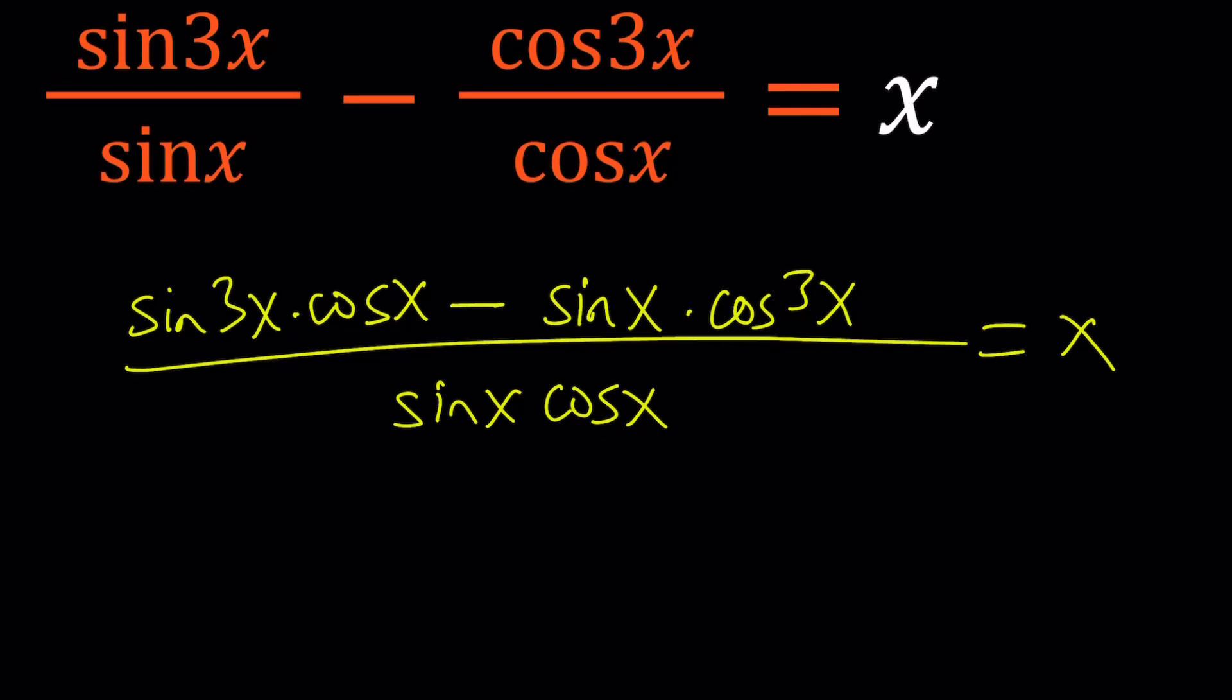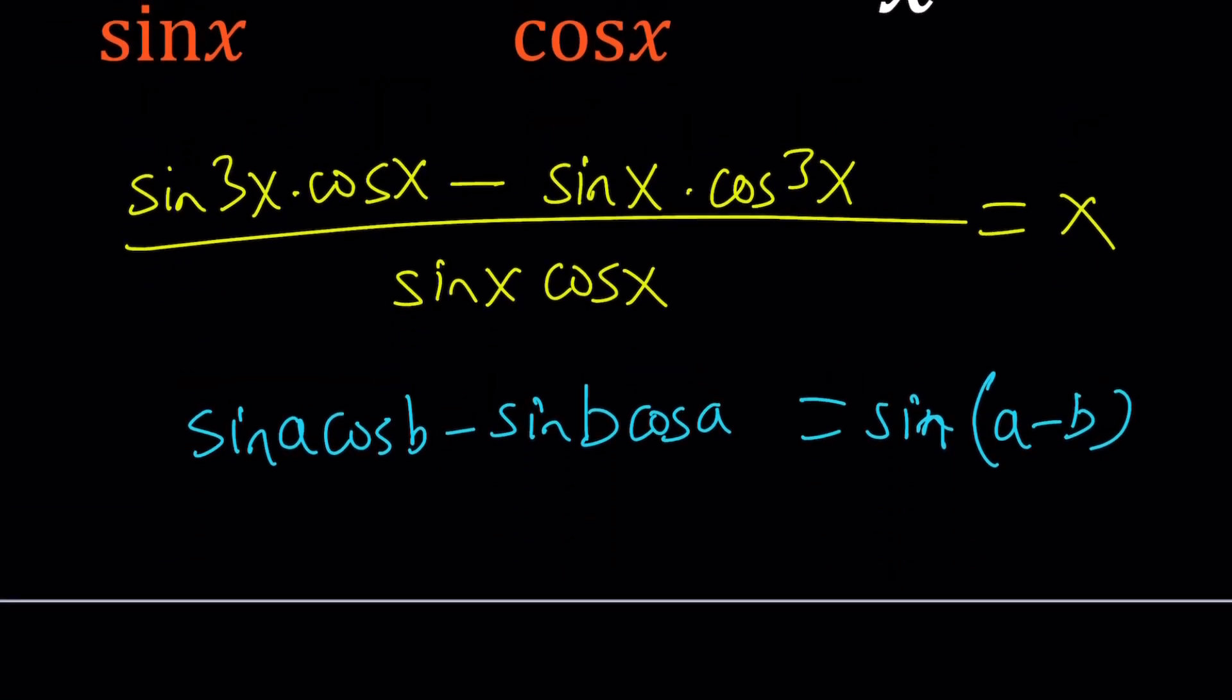If you haven't seen it, then check some of the trigonometric formulas, and especially the sum and difference formulas. The top is actually a formula for sine of the difference. So, it's like this. Sine a cosine b minus sine b cosine a. And this is sine a minus b. Make sure you know this formula. Back and forth, left and right, top and bottom.